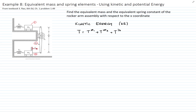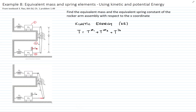Let me draw the system in a generic position. We are moving the bar in the counterclockwise direction, and we have theta — this is a small theta — this is point A, and this is point B. Since this is a one-degree-of-freedom system, we want to relate the motion of X, which drives mass 2, with the motion of mass 1, which is X1.